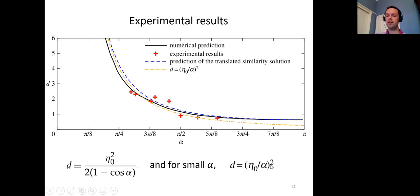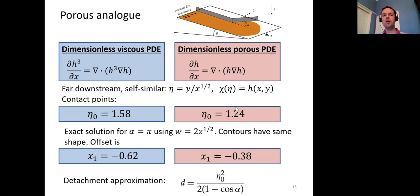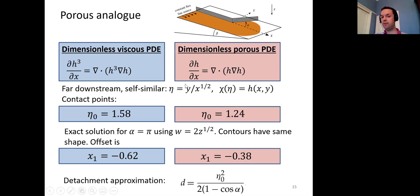This gives a simple analytic expression for the detachment distance useful for rule-of-thumb calculations. The ideas can also be extended to the porous analog, where the wall is an impermeable barrier in a porous medium — you simply change some exponents in the PDE. The system remains self-similar far downstream with y ~ √x, but with a different value of η₀, the exact solution still applies in the same way, and you obtain a different offset and detachment approximation with the same expression but a different η₀.